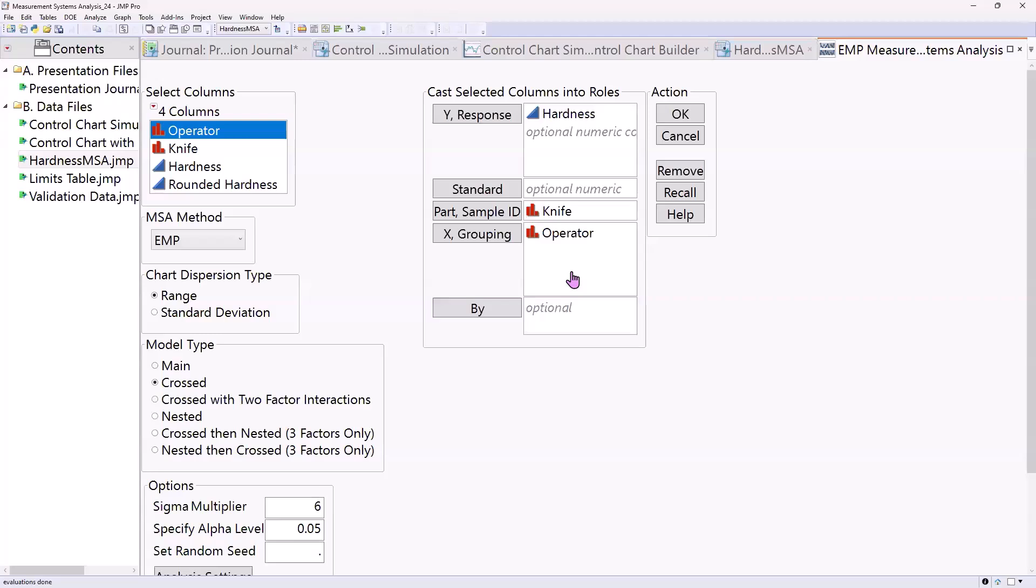different devices, include those too. So that's the point of this is that we understand and measure the amount of variation associated with all sources. In this case, we're just including knife and operator.